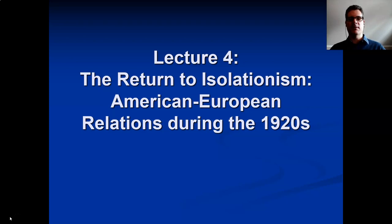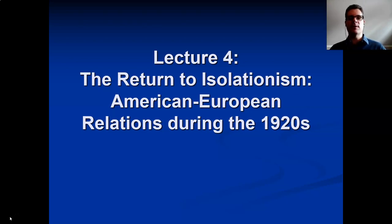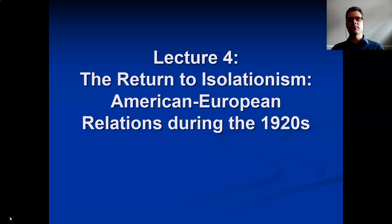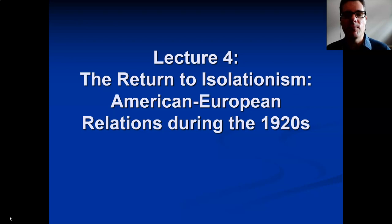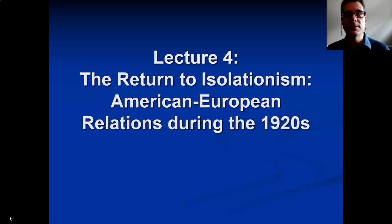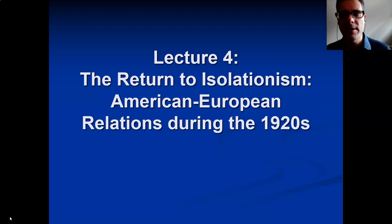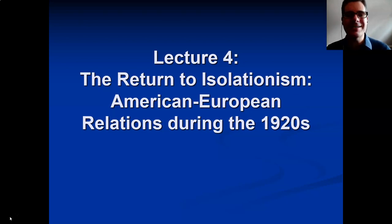The Republicans believed Article 10 usurped the Senate's prerogatives and clashed with the American Constitution, which gives Congress the right to declare war. The Republicans were somewhat divided between a more pragmatic wing willing to do some kind of deal with Wilson, and 'irreconcilables' who simply didn't want anything to do with it. The historical debate rages over whether there were sufficient moderates with whom Wilson could have negotiated.